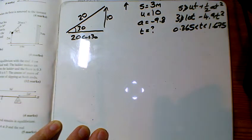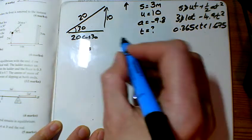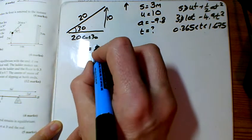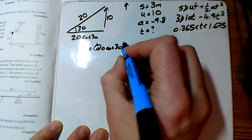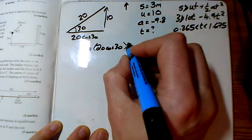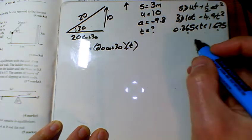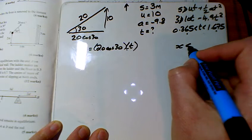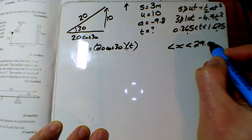So x is going to be how far it's gone horizontally, and how far it's gone horizontally will be 20 cos 30 times by t. So I'm going to put those t's both in there, and I can find out that x is between 6.32 meters and 29.01 meters. That's my answer for that one.